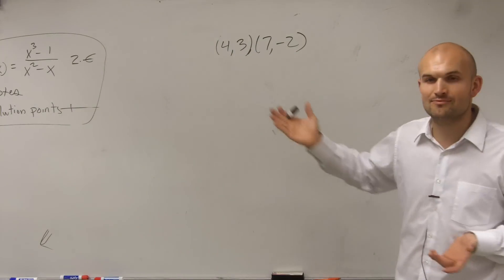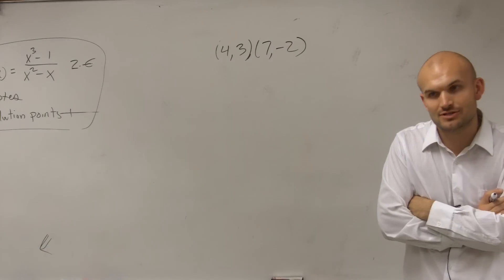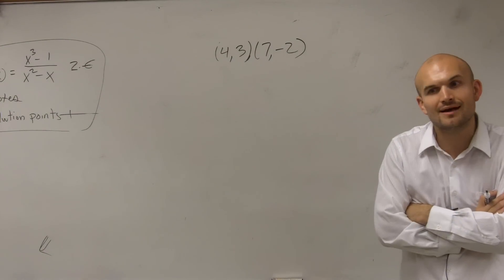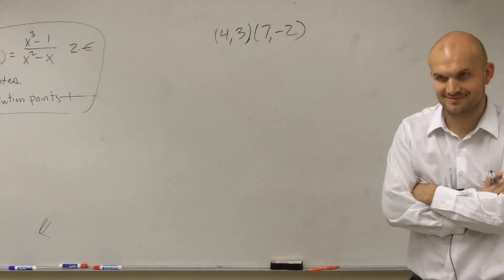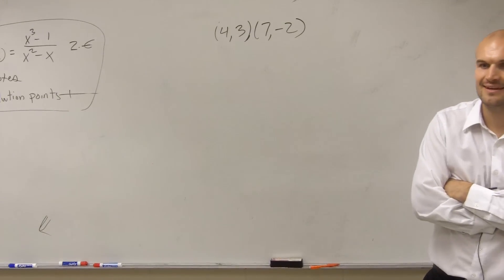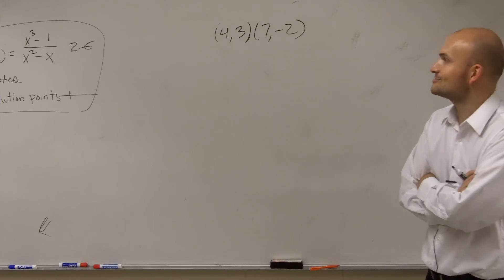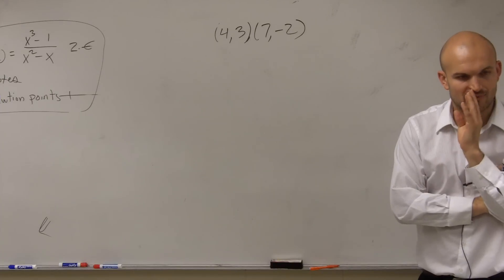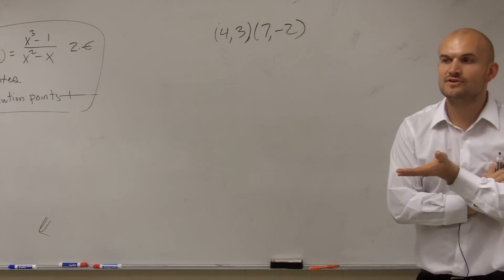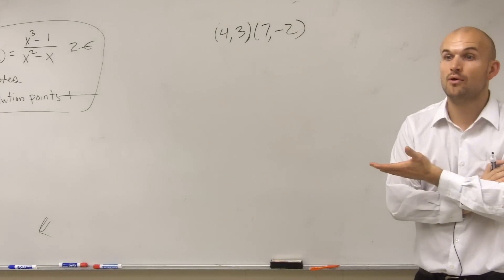So now the next thing we need to do is what if I'm just giving you two points, and out of those two points I want you to do that. So what we need to do is we can do this a couple ways. First way is you guys can plot these points on a graph and do the slope triangle like we did before.